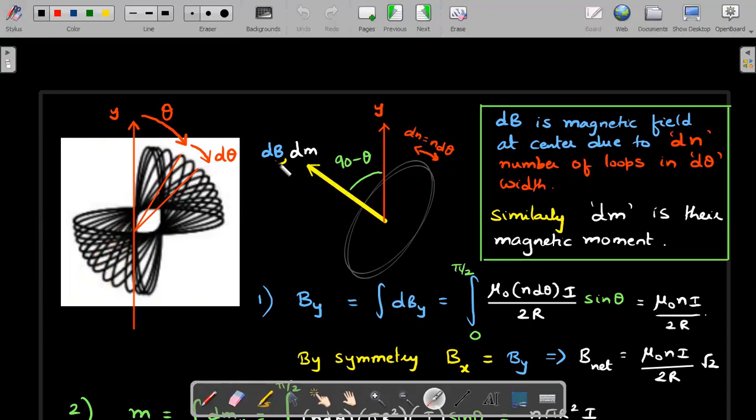Pick these circular turns on both sides, remember these circular turns within this d theta and draw them here. The number of turns, because he talked about n as number turns per unit angle, would be n times d theta.